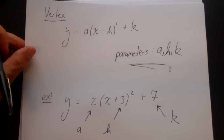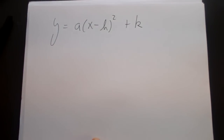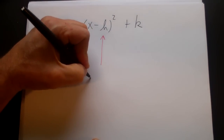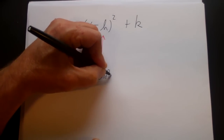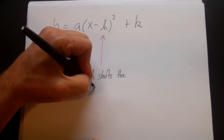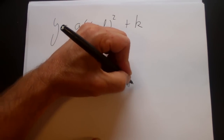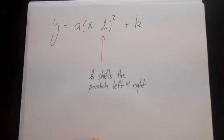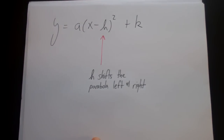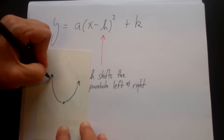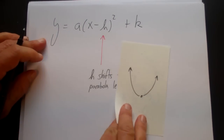So let's look and see what each one of these does. If we have the form y is equal to a times x minus h squared plus k, let's look at these in turn. The h shifts the parabola left and right. You have a parabola and the h simply moves it back and forth.